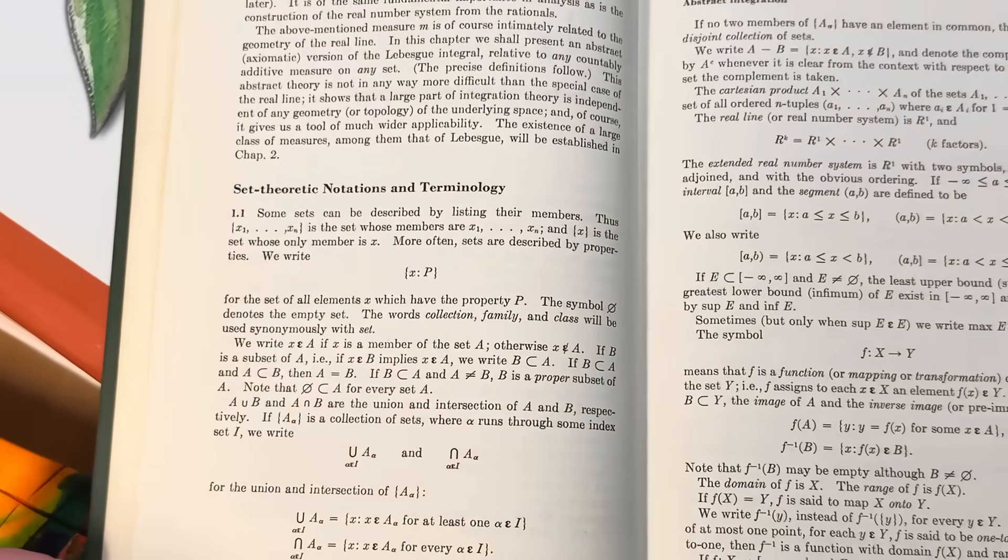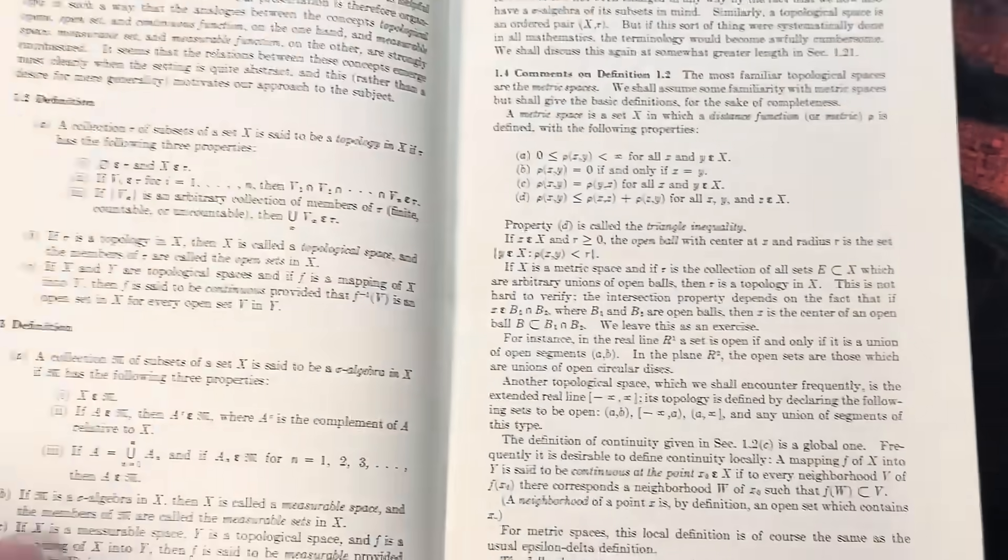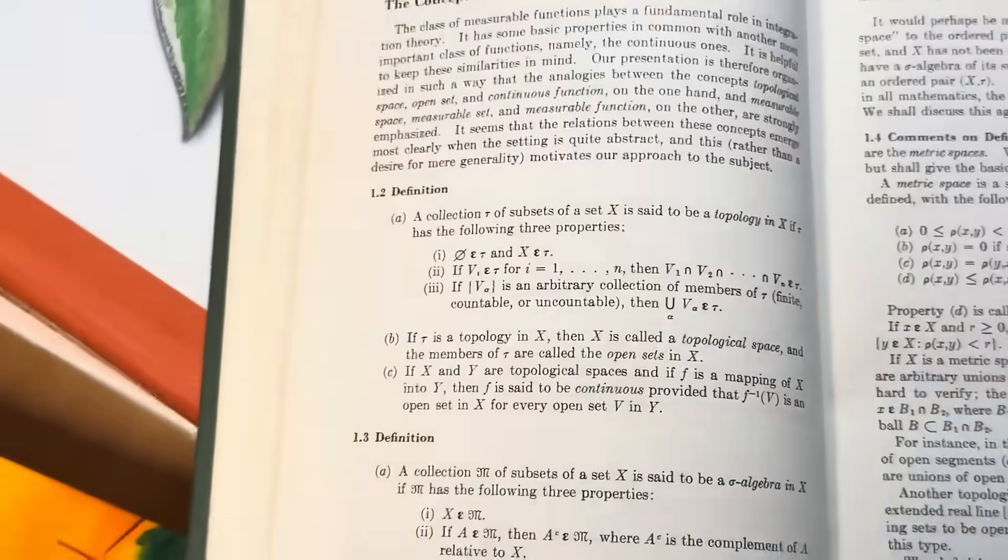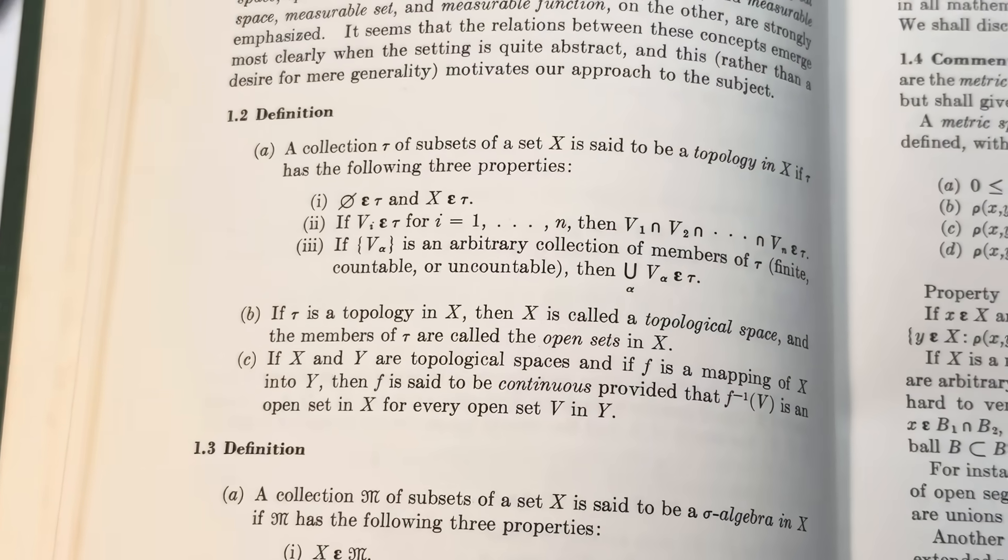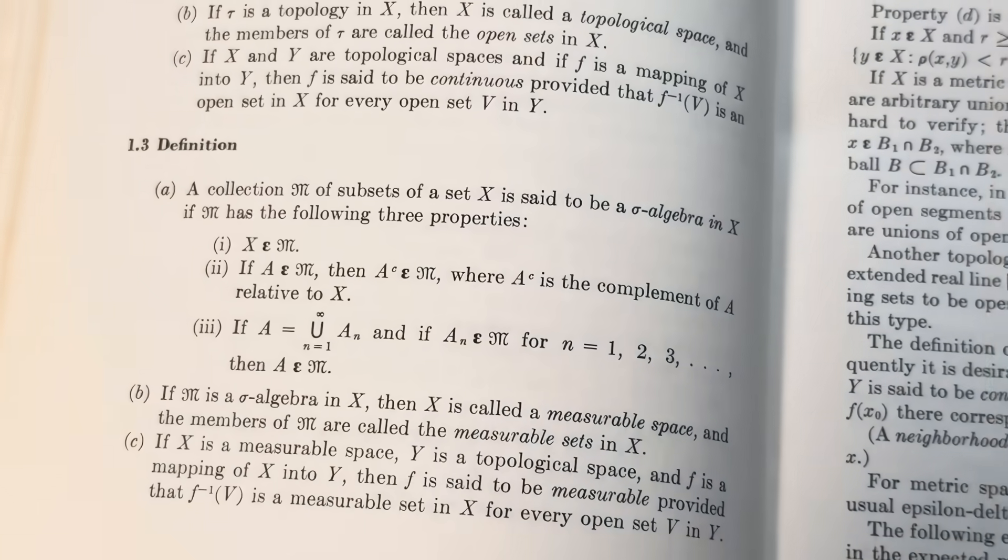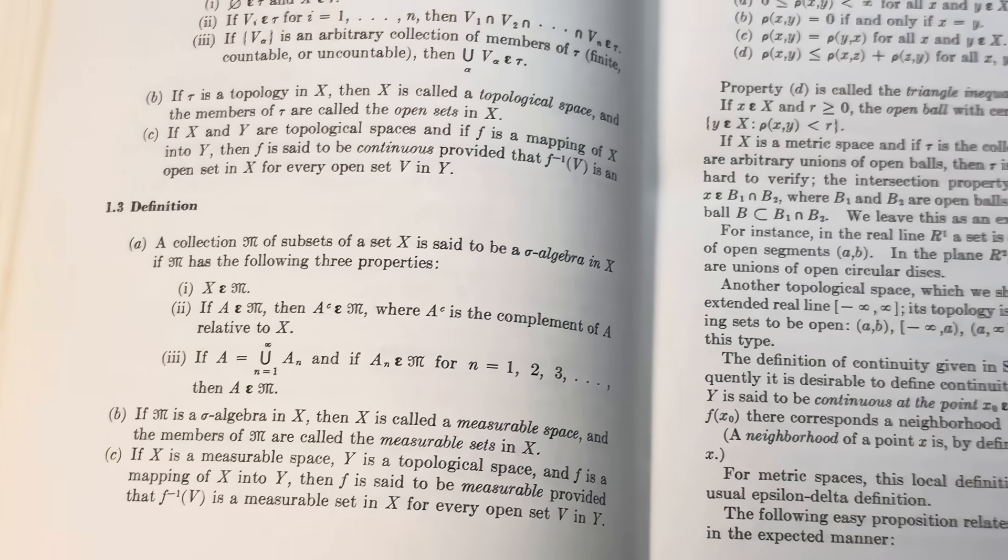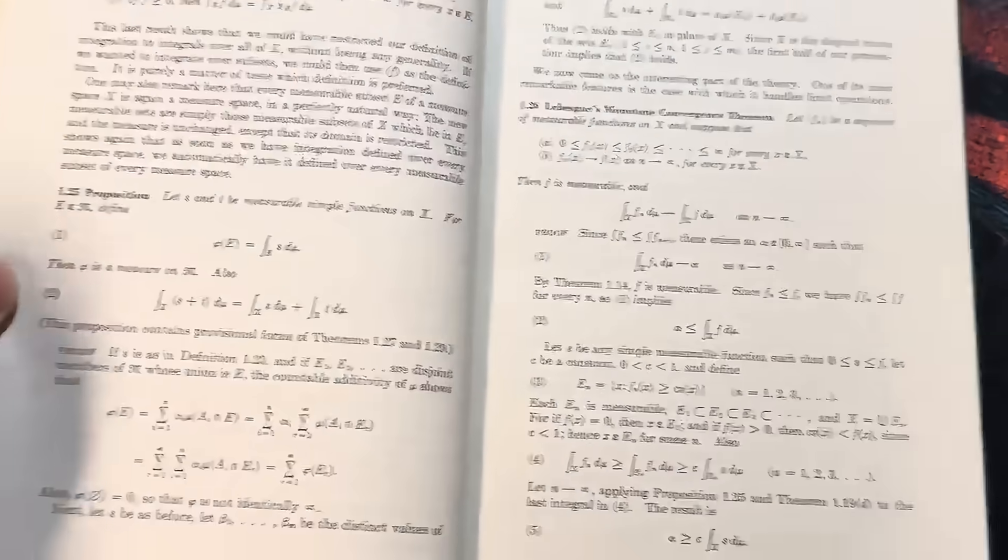Here's some set theoretic notations and terminology. Here's the definition of a topology. And then here they have definition of a measurable space.